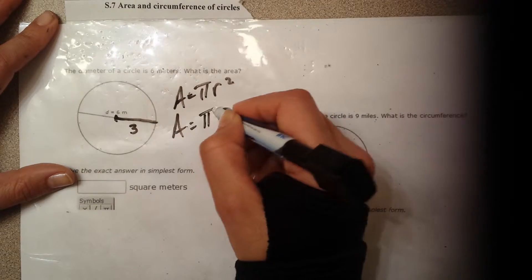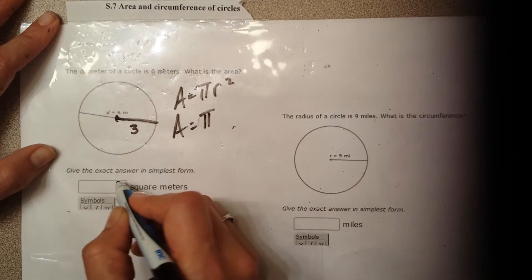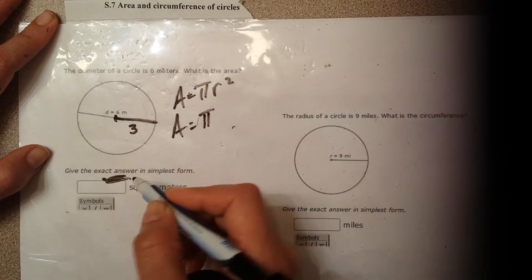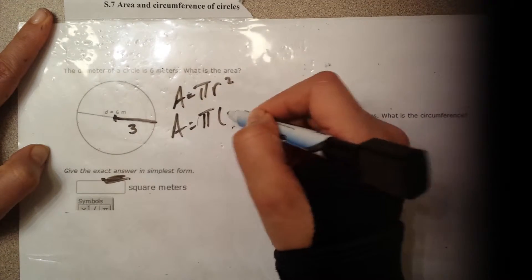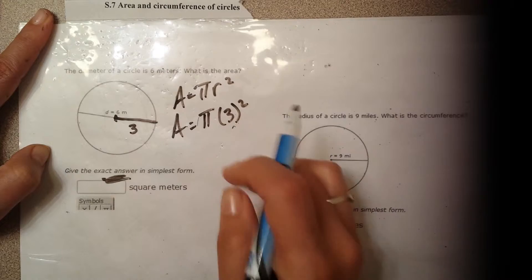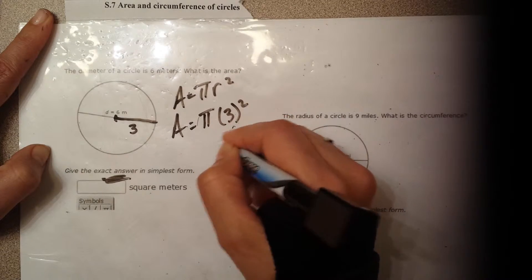Okay, simply put in the numbers, so pi. And the reason I'm leaving pi is again because they want it as an exact answer. Okay, they don't want any decimals. Radius is 3, so we're going to put 3 squared. So 3 squared is 9, so you're going to get pi 9.